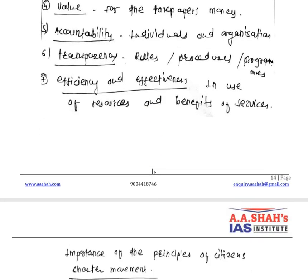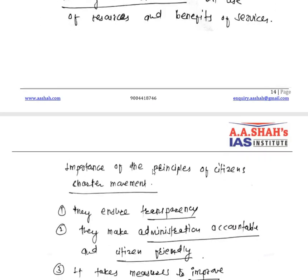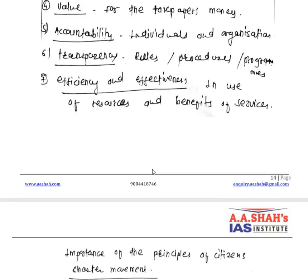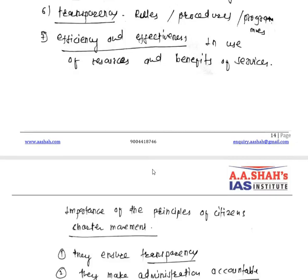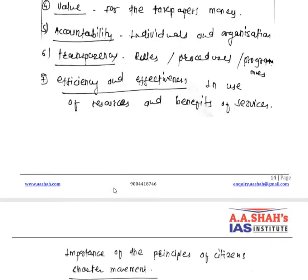Efficiency and Effectiveness in the use of resources and benefits of services is the final principle. Whatever resources the government has, they belong to the people and should be utilized in an efficient and effective way. So the principles of the citizen charter movement are: Quality, Choice, Standards, Value, Accountability, Transparency, and Efficiency and Effectiveness.